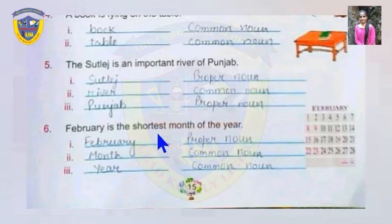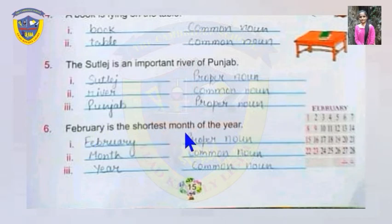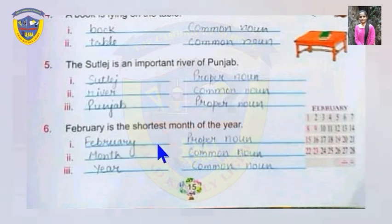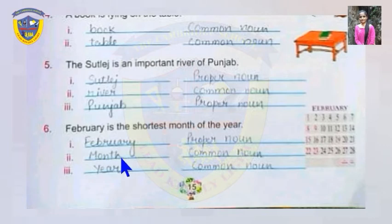In the sixth sentence: February is the shortest month of the year. Here, February, month, and year are nouns. February is the name of a specific month, so it's a proper noun. Month is just a common noun because no specific name is given. And year is also a common noun.